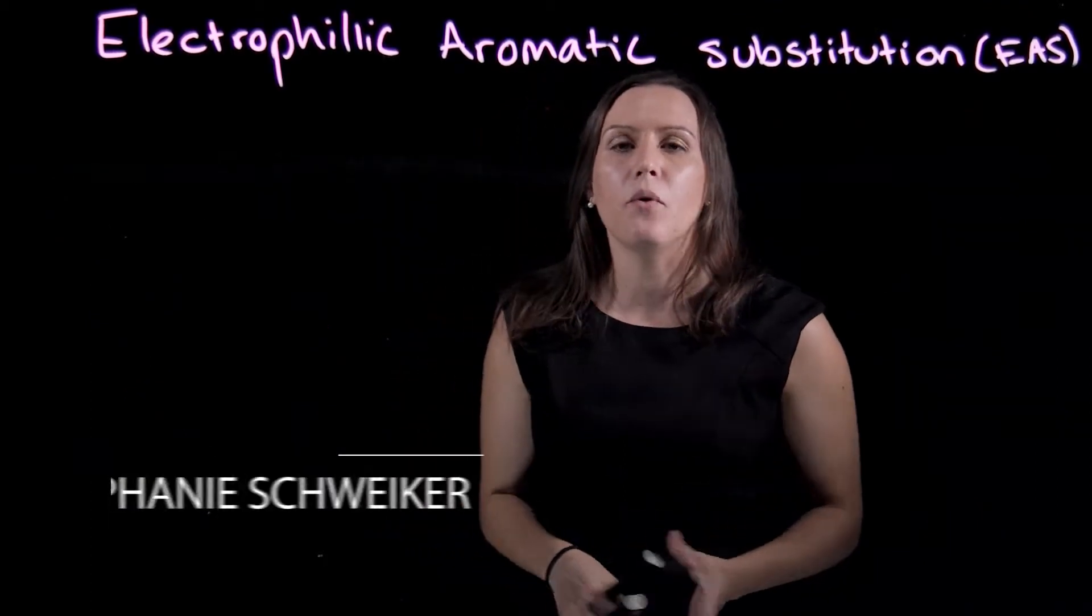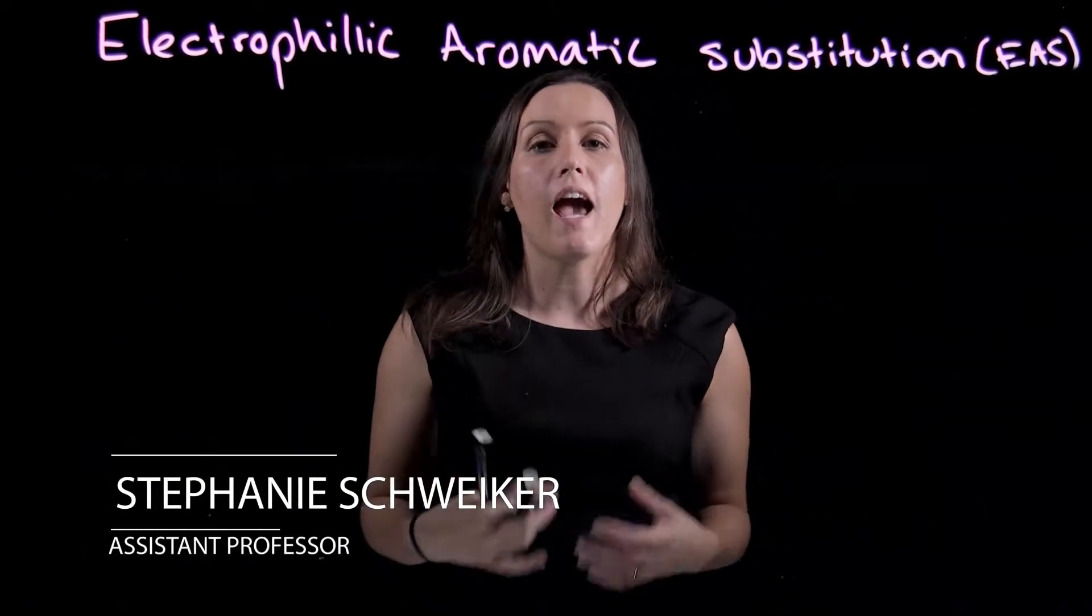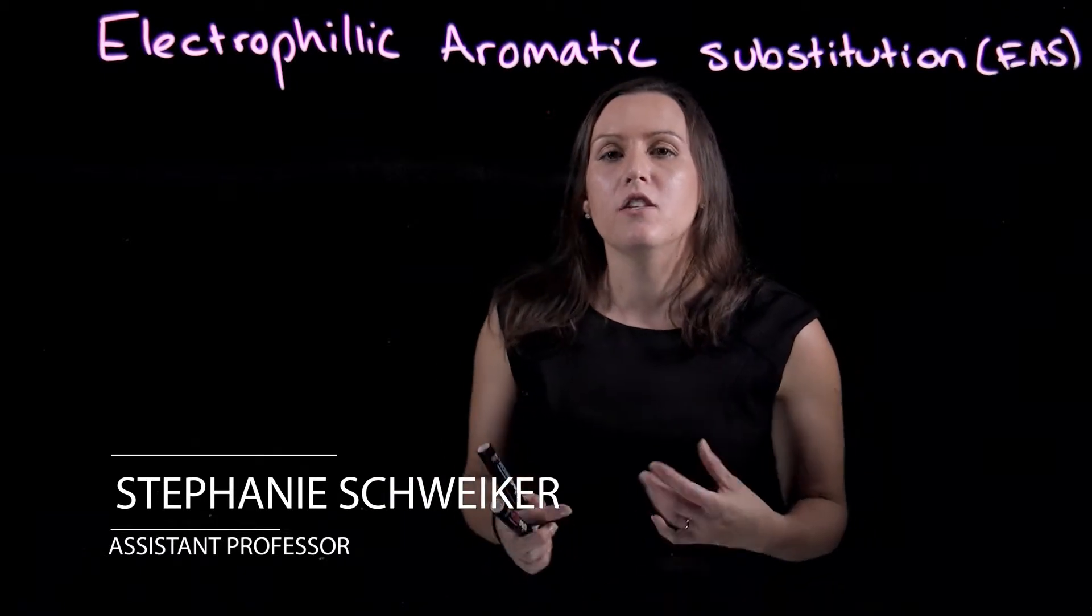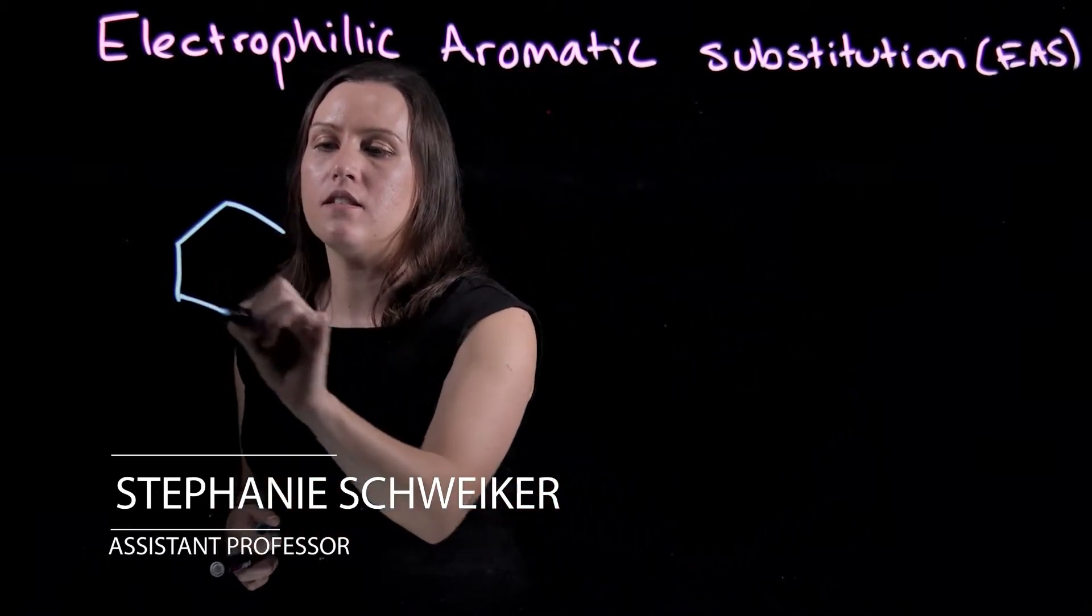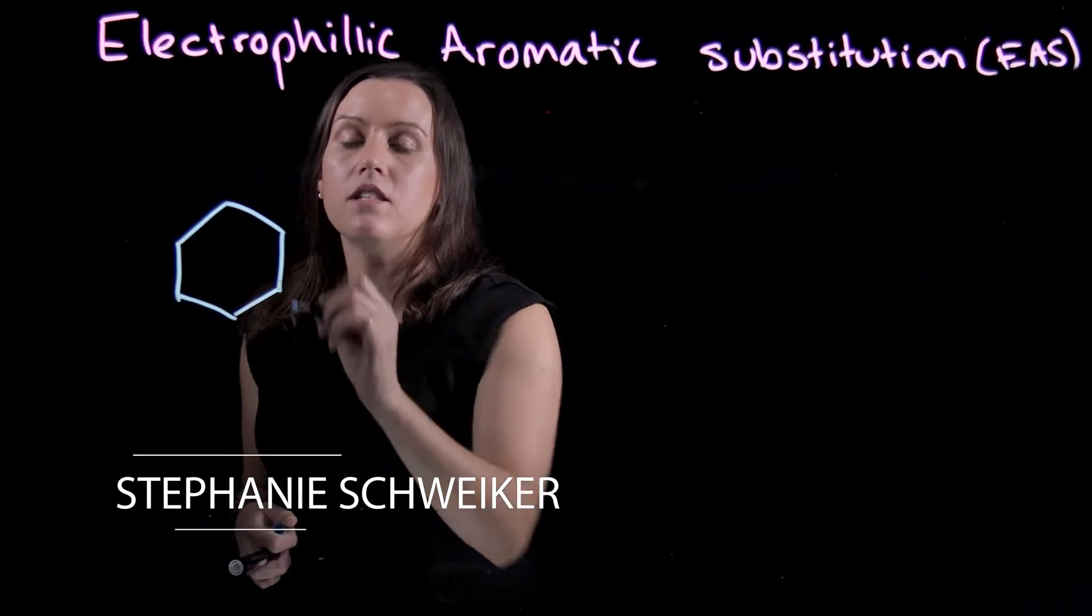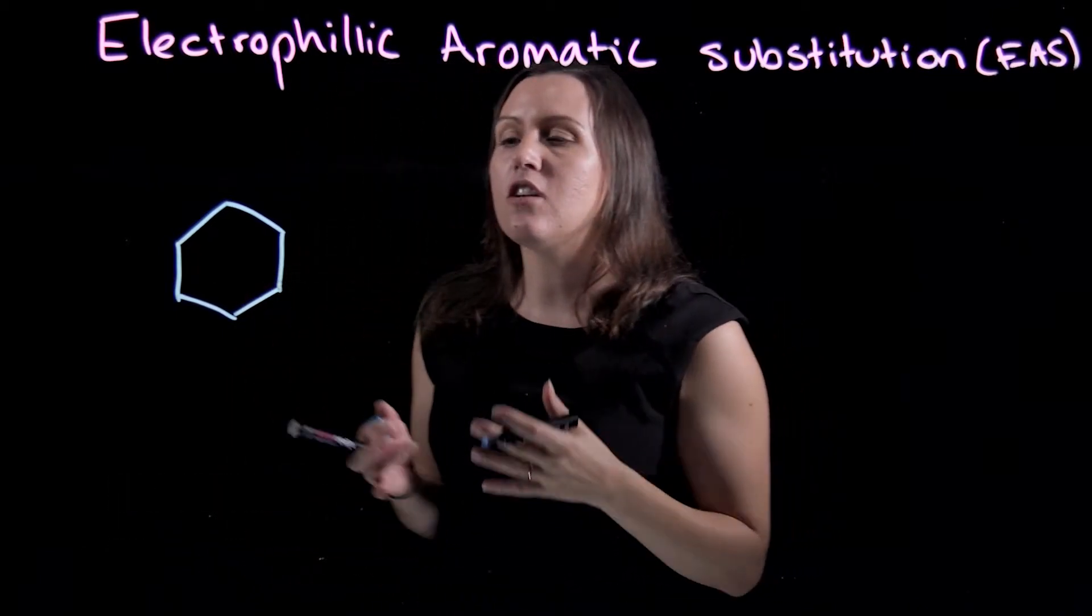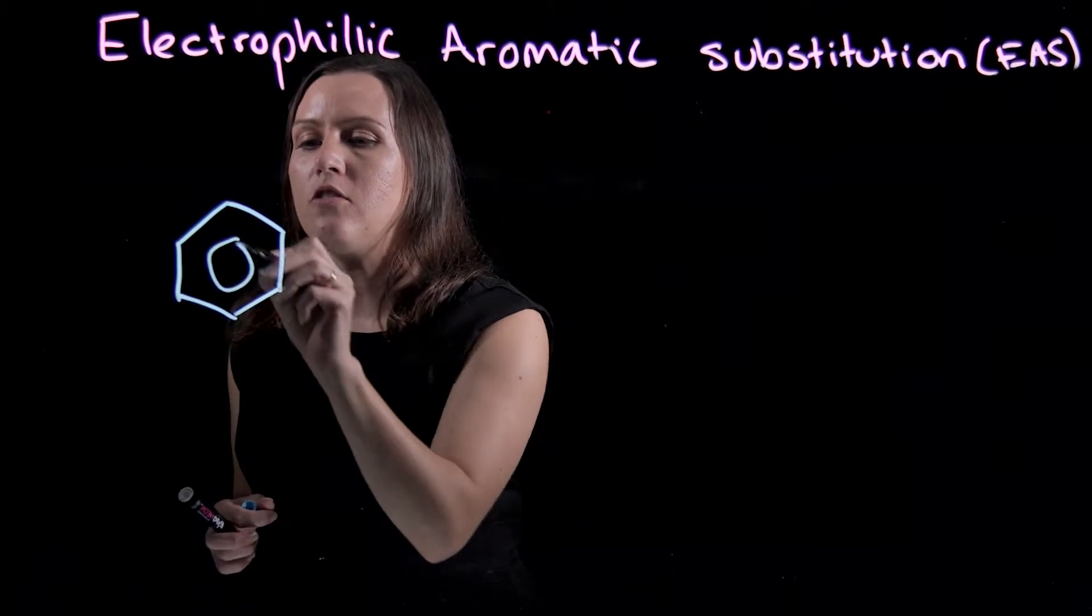Okay, so in this video we're going to be talking about electrophilic aromatic substitution. We know benzene is very, very stable. Benzene is six carbons, six hydrogens, and each carbon has a hydrogen. So we can generalize the structure with a circle in the middle.